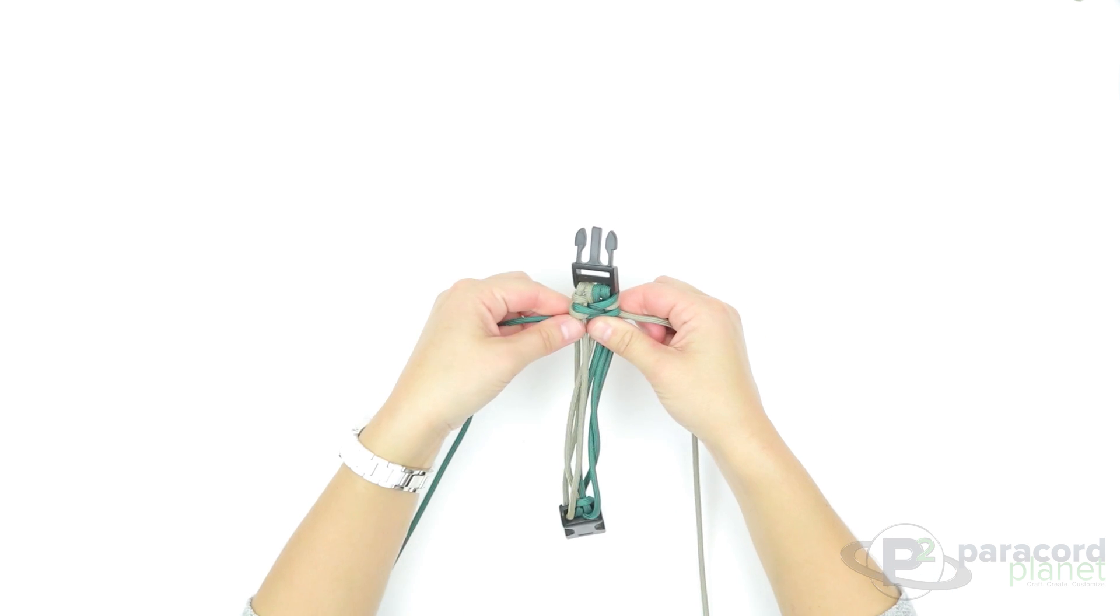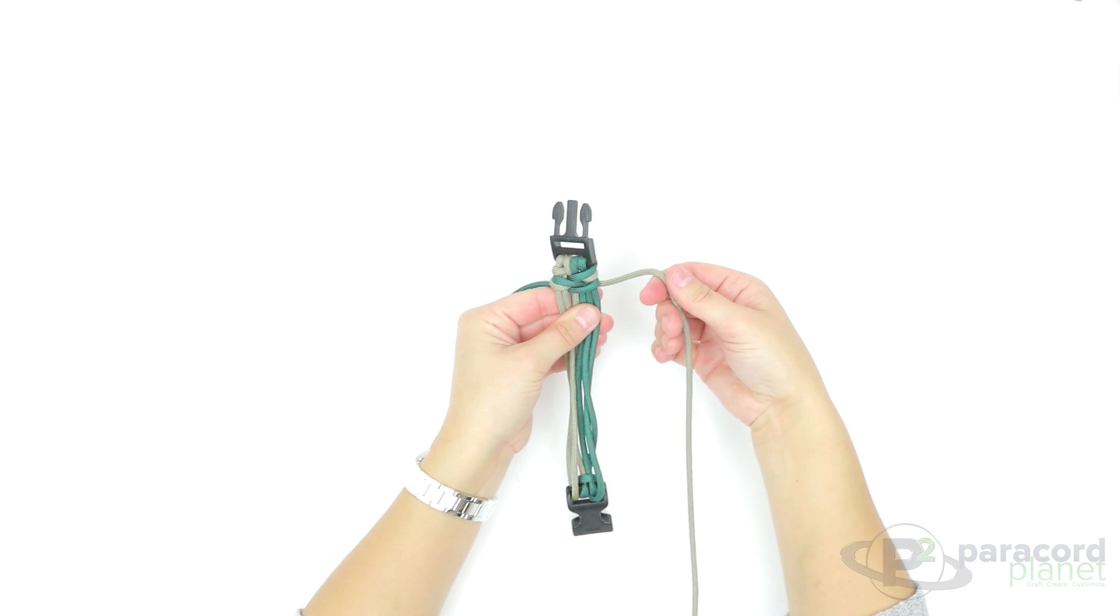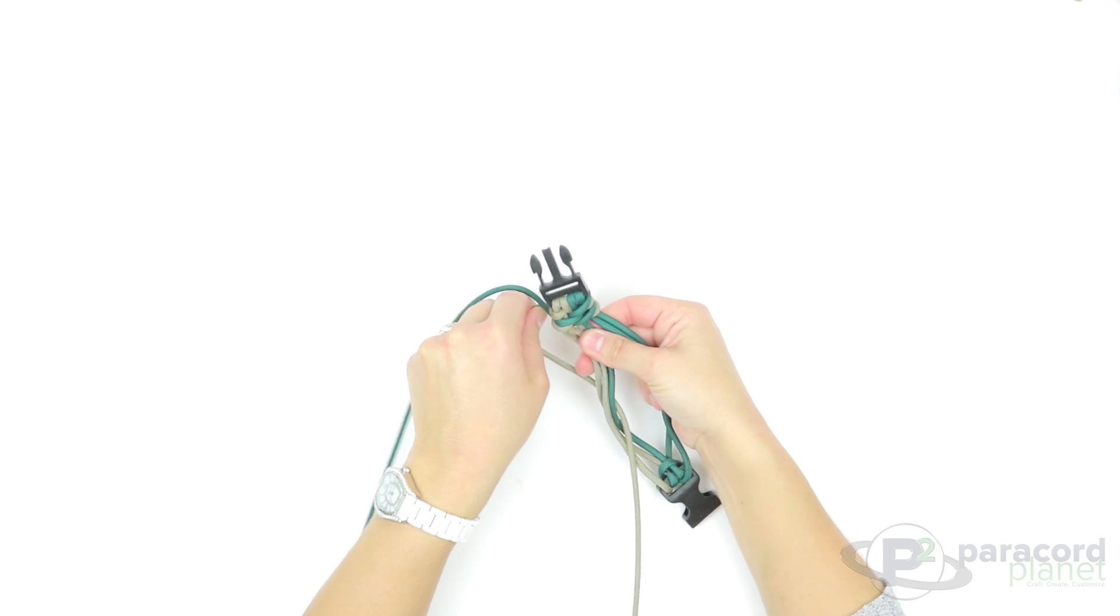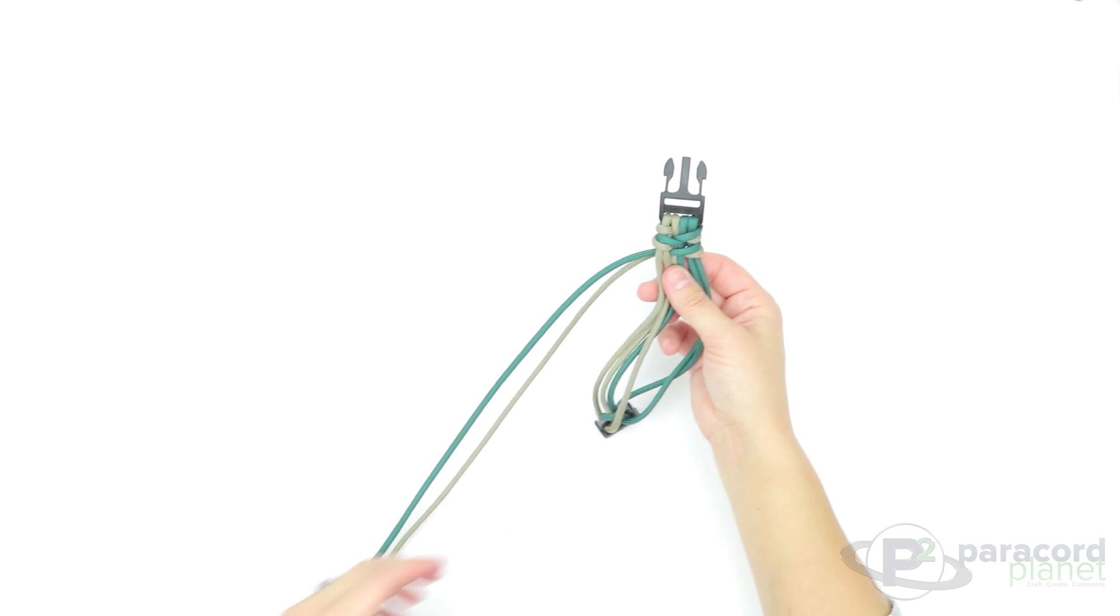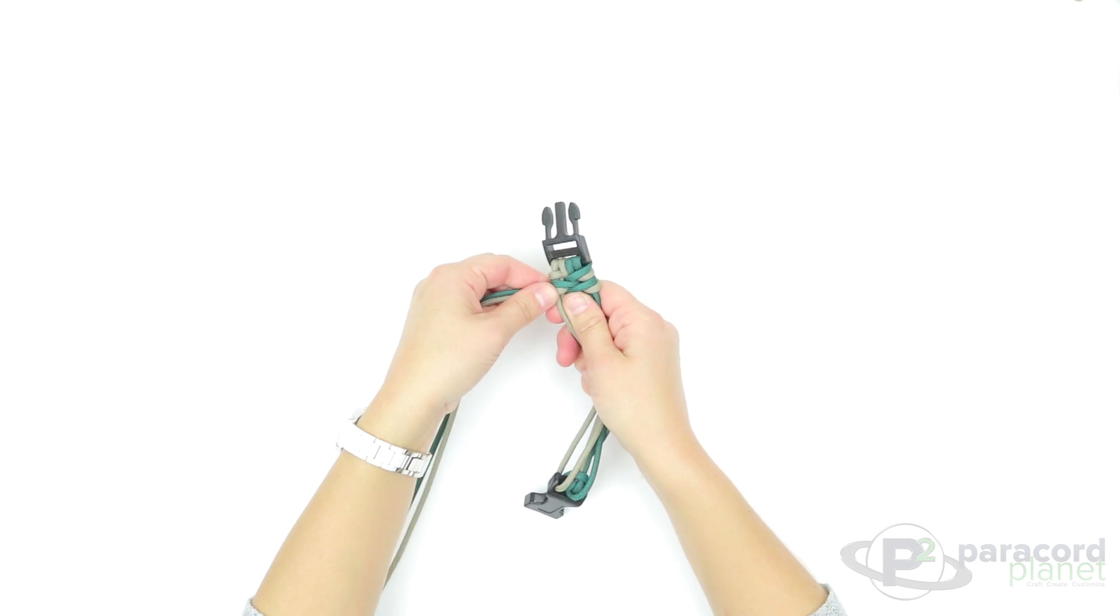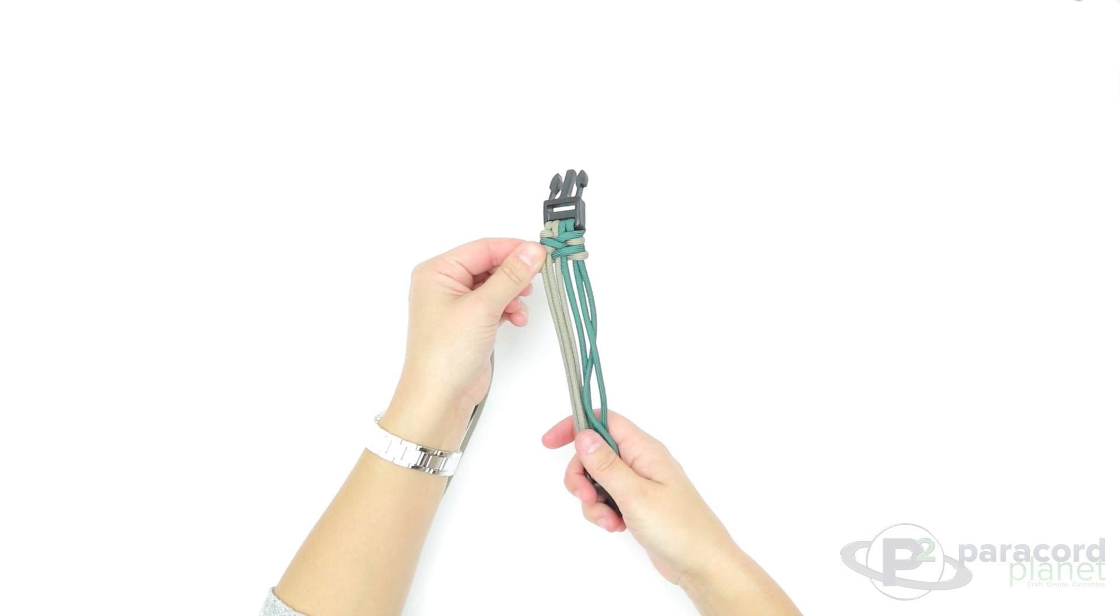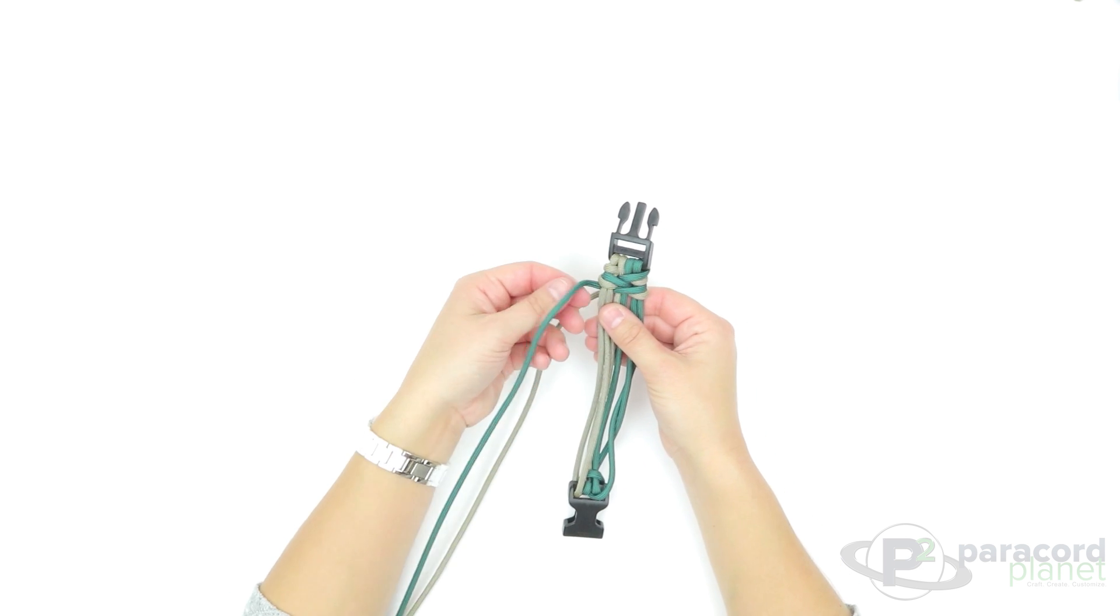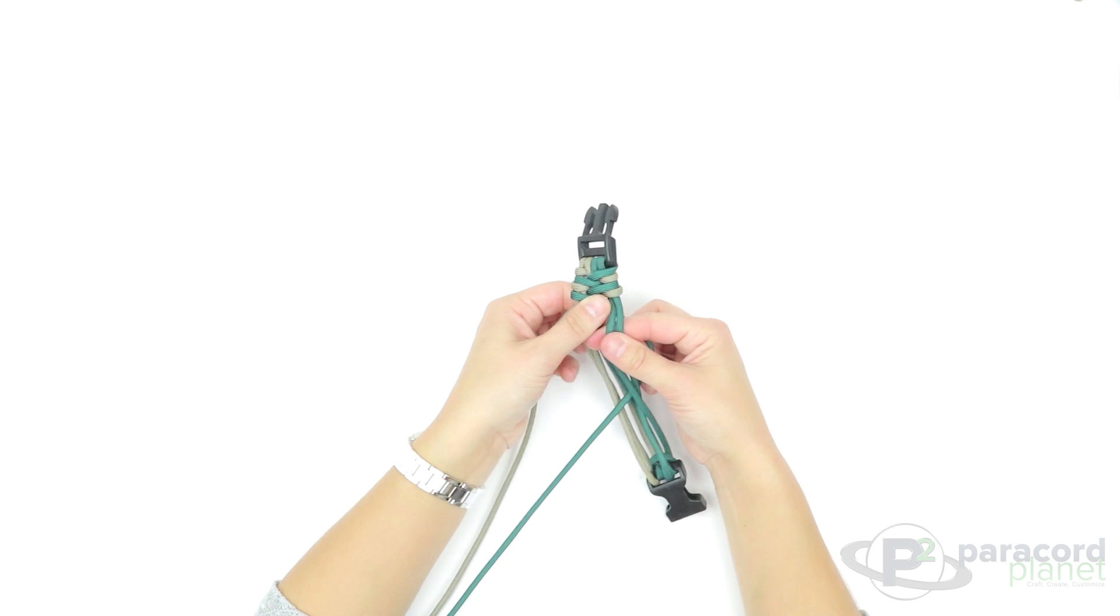One more here. Take the tan cord, you'll go over two and behind four, push it up. Take your green cord and you're going to go over four and behind two.